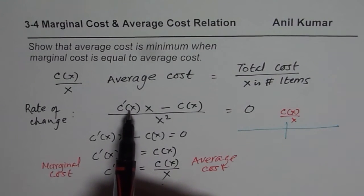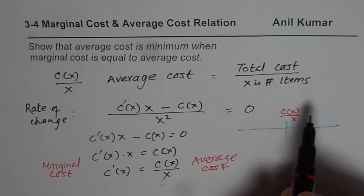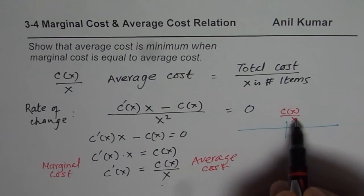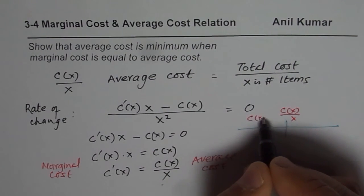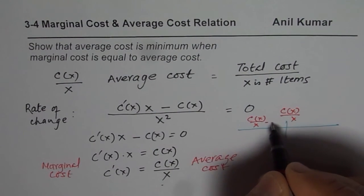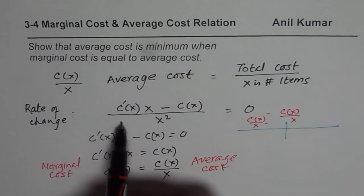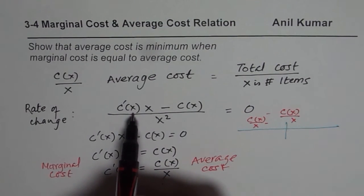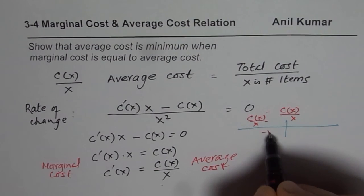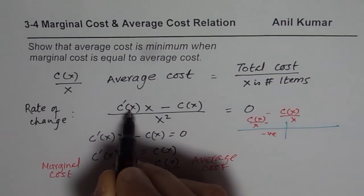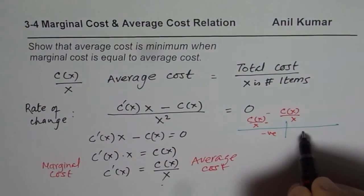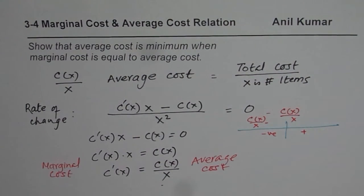So if I replace c'(x), that is the marginal cost, by a value which is less than this. Let us say we have c(x) over x minus 1, something less than this. In that case, this side of the function will be negative value here. If I pick a value which is more than the average cost, then I get a positive value on the other side.